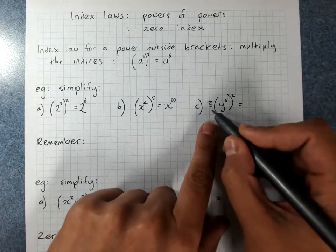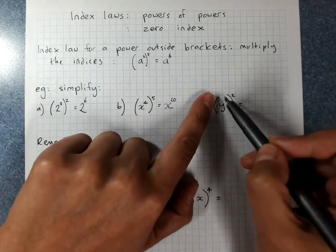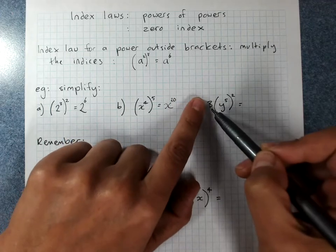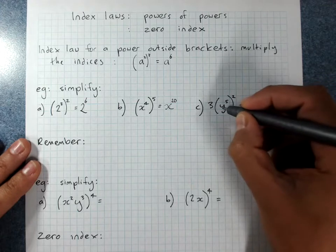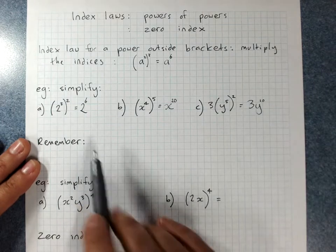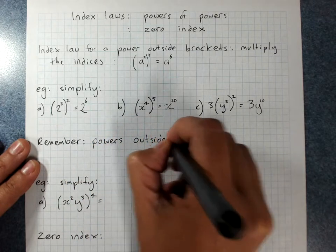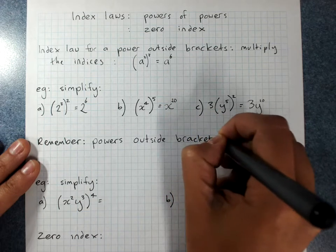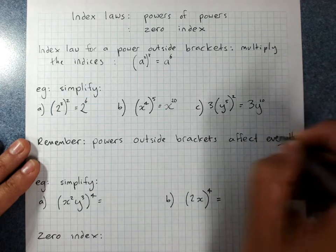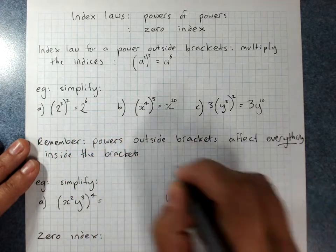Now this one's a bit different. The 3 is outside the brackets — this rule is only for powers belonging to the brackets. The only thing that gets squared here is what's in the brackets. The 3 is outside. So this is 3 times y to the power 5 times 2, giving y to the power 10. Remember, powers outside brackets affect everything inside the brackets, but nothing outside.